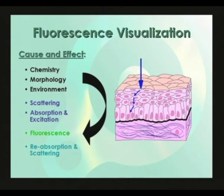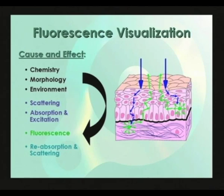Why is fluorescence a useful tool in finding diseases such as dysplasia and oral cancer? The biochemical, morphologic, and environmental changes that accompany disease processes affect natural fluorophores in the tissue and the absorption and scattering properties of the tissue. The net result is a change in the fluorescence observed.